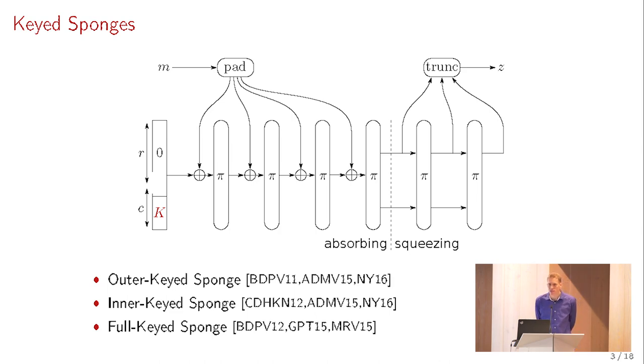Note that the full keyed sponge is a generalization of the inner keyed sponge, because you can just pad the message in such a way that you have R-bit message blocks, and then you pad it with zeros. This work, therefore, considers the outer keyed sponge and the full keyed sponge. The focus in this work is on the outer keyed sponge and the full keyed sponge.